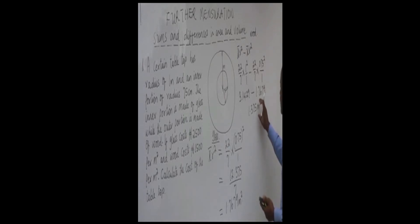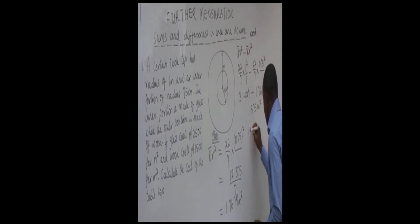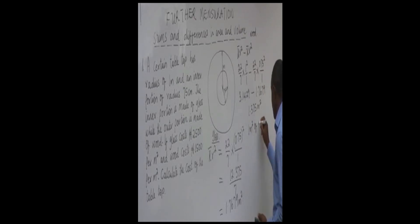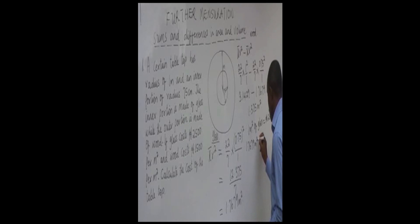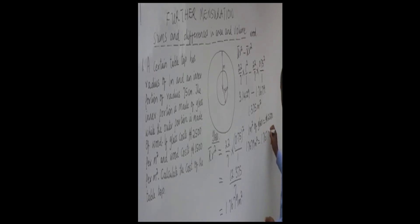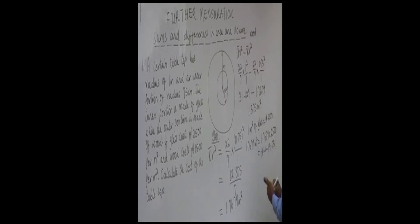Now we find the cost of the glass by proportion. If 1 meter squared of glass costs 2,500 Naira, then 1.7679 meter squared costs 1.7679 × 2,500, which gives us 4,419 Naira 75 kobo. That is the cost of the glass portion of the table top.